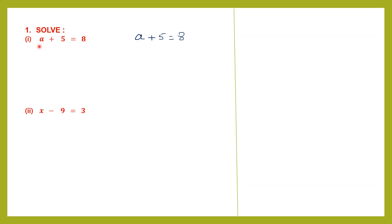Solving an equation means finding the value of the unknown quantity, and here the unknown quantity is a. To find the value of a, we need to remove this +5. We can remove it by subtracting 5 — plus 5 minus 5 becomes 0, leaving only a. So I subtract 5 on the left-hand side, which means I also subtract 5 on the right-hand side. Minus 5 on both sides — the equation remains the same.